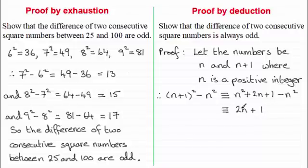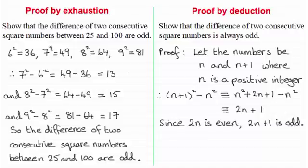And can you see that if I double any positive integer, 2n, it's going to be an even number. And then if I add 1 to that even number, it's going to be an odd number. So you'd write a statement like that: since 2n is even, 2n + 1 is odd. And then you write in your conclusion.